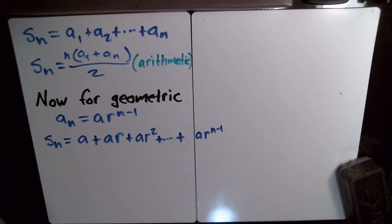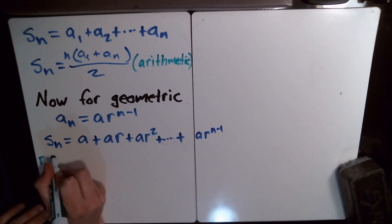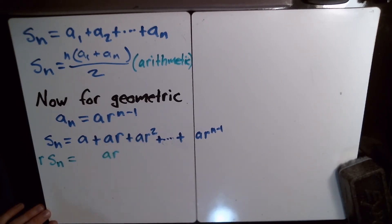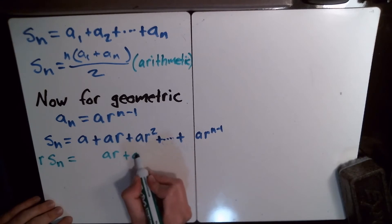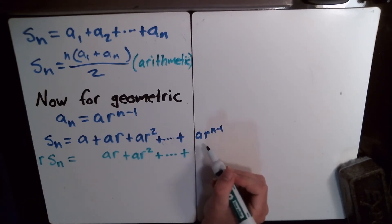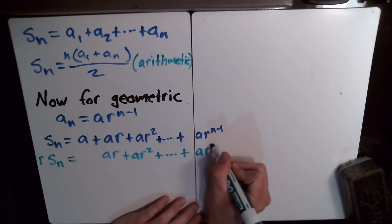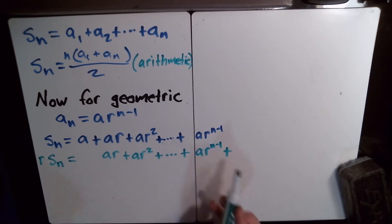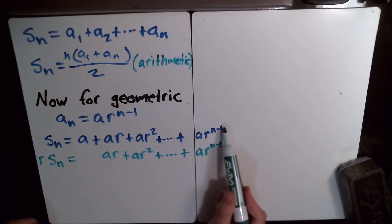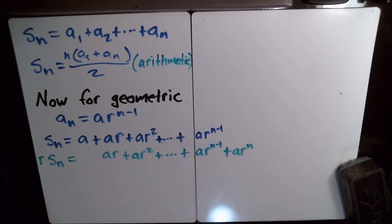The trick here is if you multiply all of S sub n by r, you get something really similar. When you times S sub n by r, you just distribute r in on everything. So a times r becomes ar, ar times r becomes ar squared, and so on. Up at the very end, a times r to the n minus 1, when you times that by r, you just add one to the exponent, so you get ar to the n power.